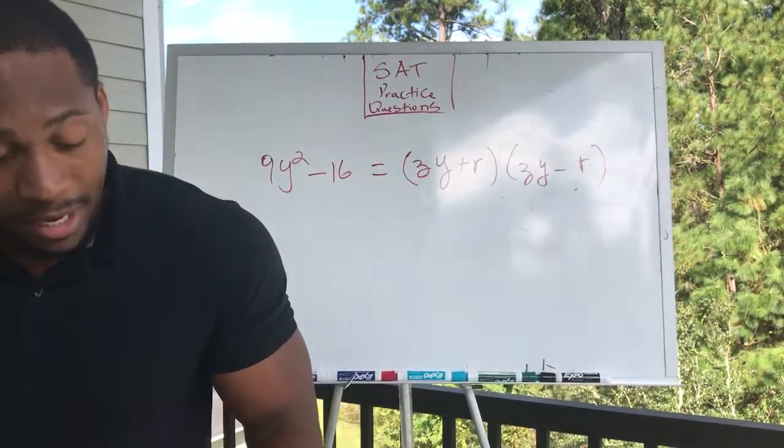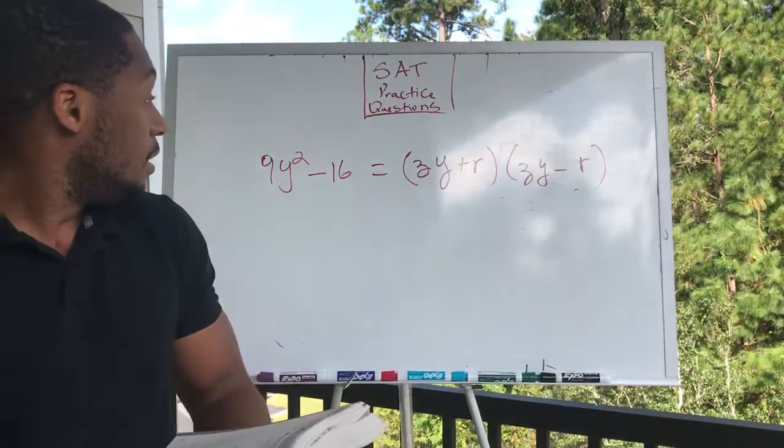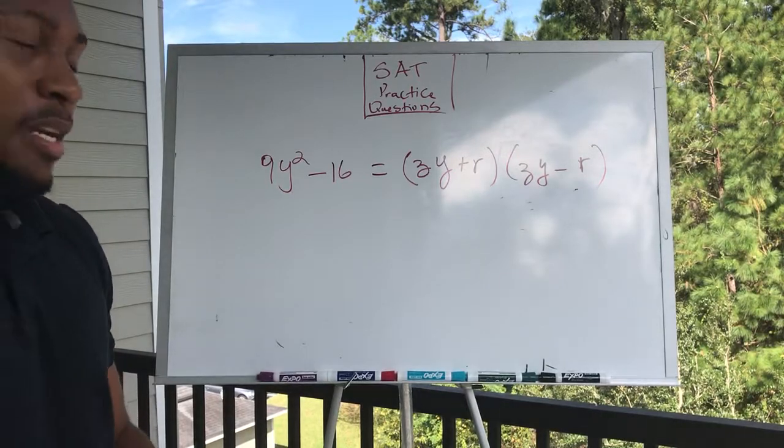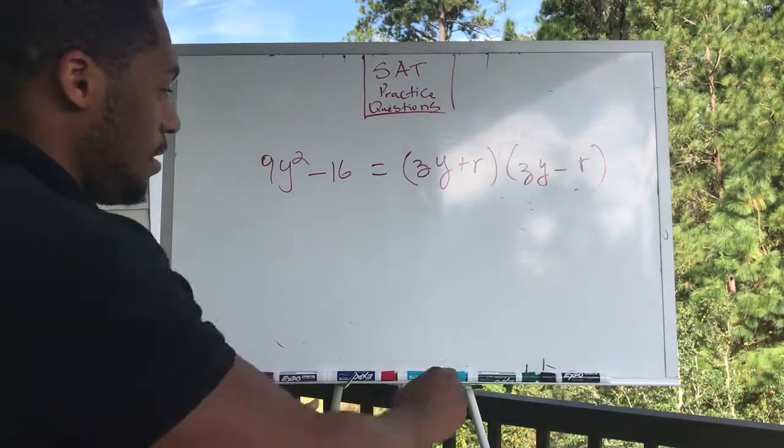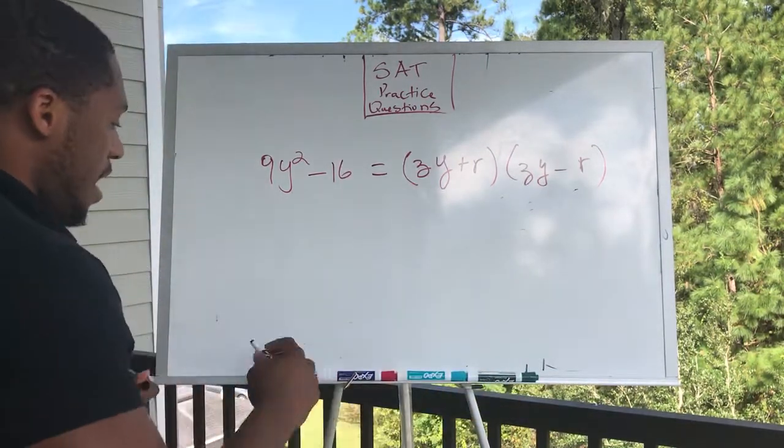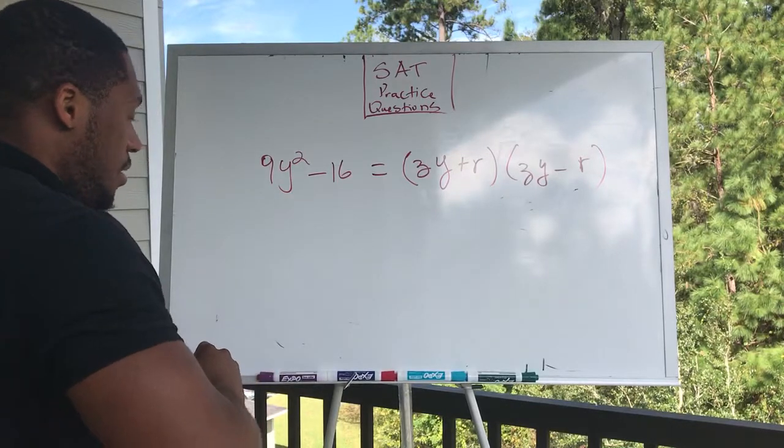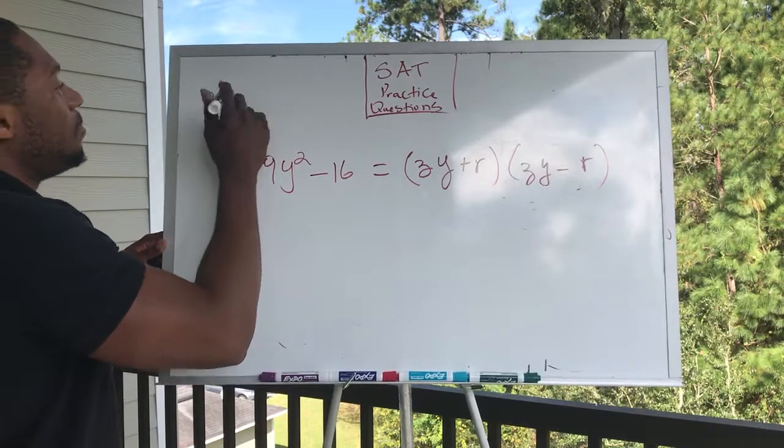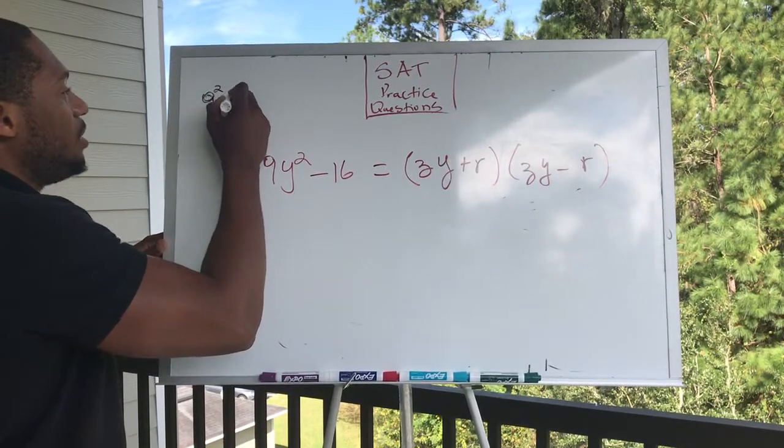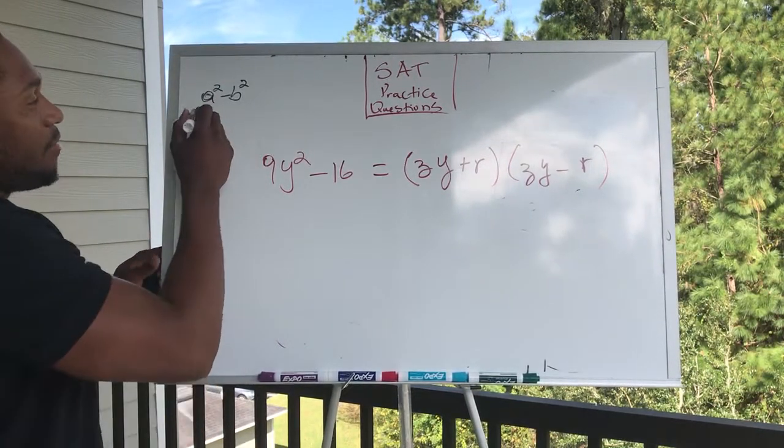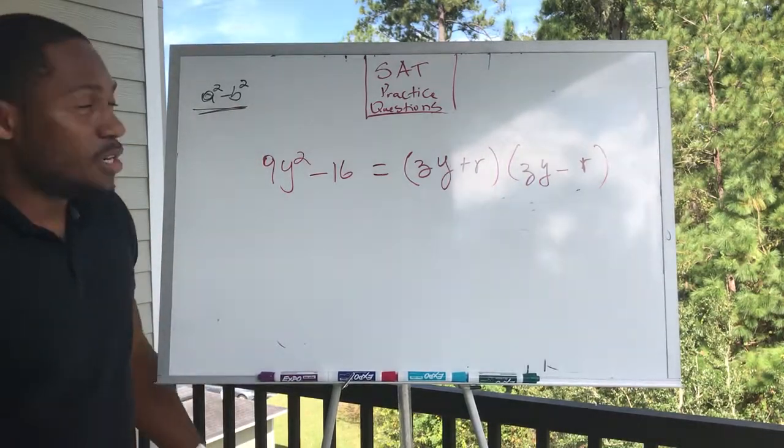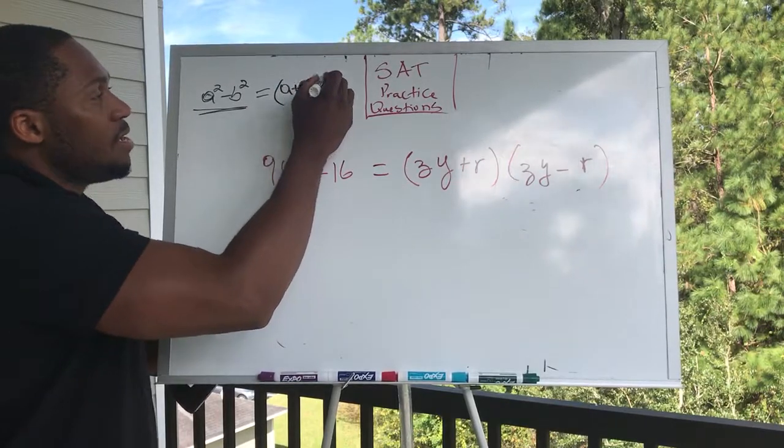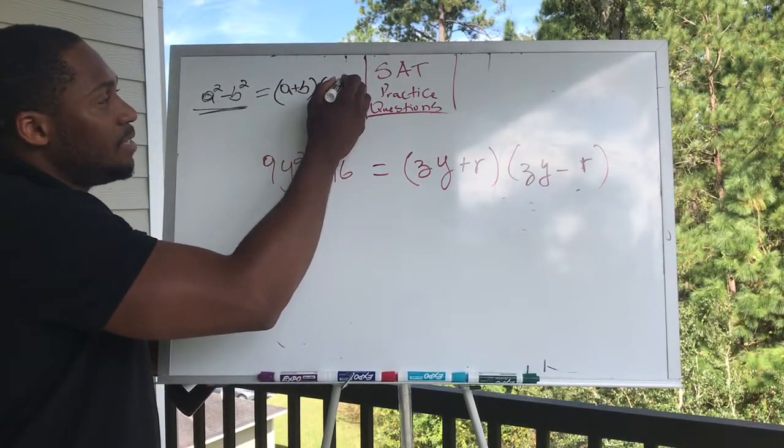We're going to need only one formula for this. All right, so there's a formula that says if you have A squared minus B squared, technically what you have is A plus B times A minus B.